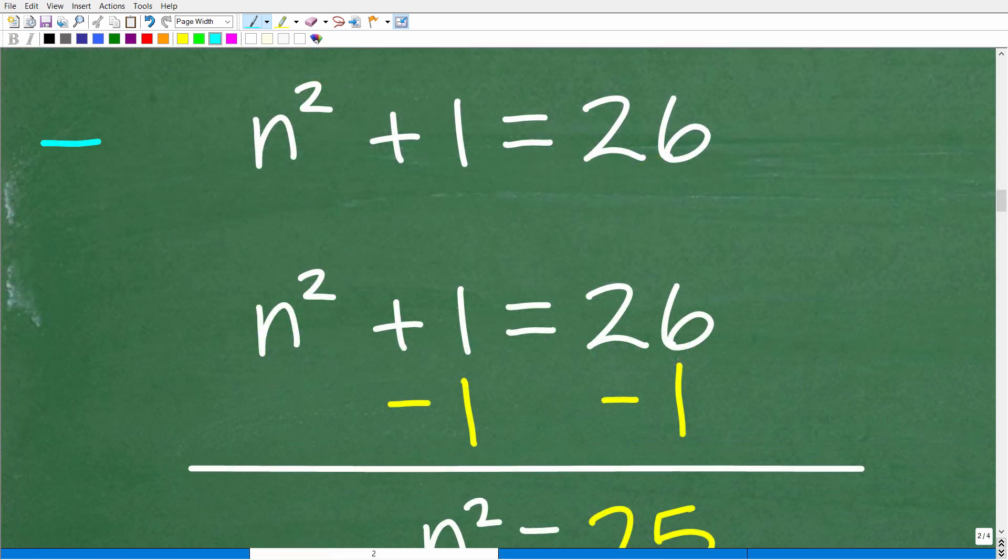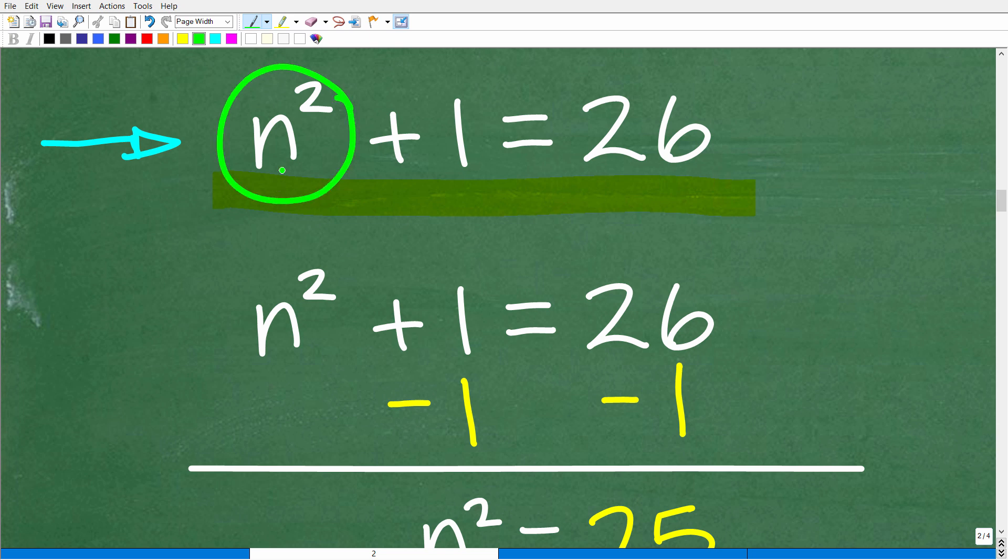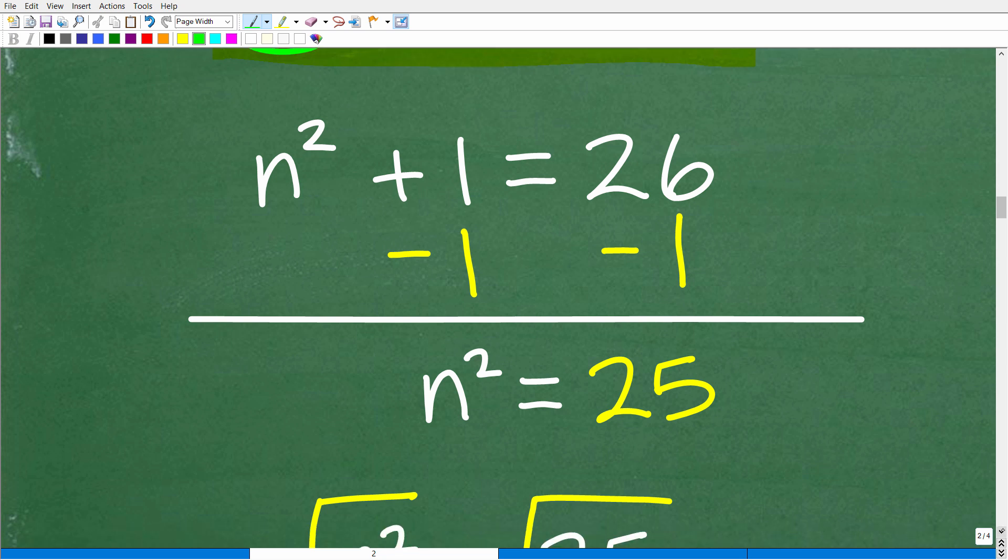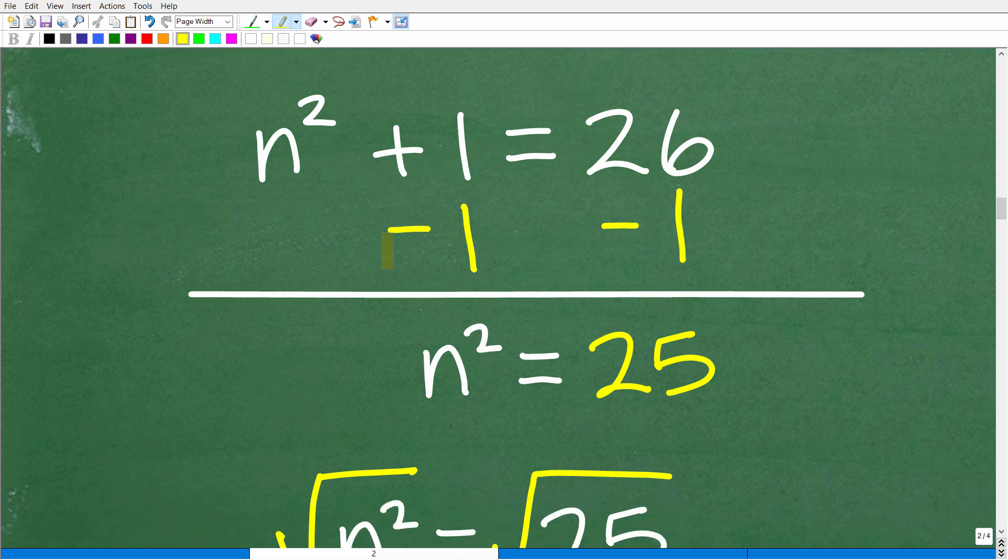Now that we've translated this verbal sentence into this algebraic equation, all we need to do is solve for the variable n. We have n squared plus 1 equals 26. This type of equation in algebra is called a quadratic equation. The first thing we're going to do is subtract 1 from both sides of the equation. That way, we get our n squared all by itself on one side, and 26 minus 1 is 25. So now we're down to the equation n squared equals 25.